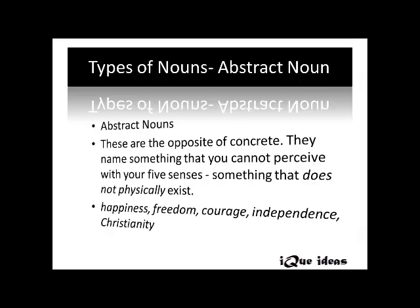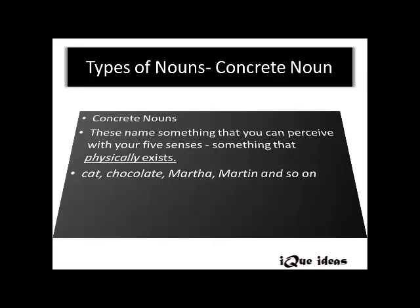The next type is abstract noun. These nouns are not tangible — they are the opposite of concrete. They name something you cannot perceive with your five senses, something that does not physically exist. Examples are happiness, freedom, courage, independence, and Christianity. Concrete nouns, the opposite of abstract, name something you can perceive with your five senses that physically exists. Examples are cat, chocolate, Martha, Martin — they can all be seen and touched.